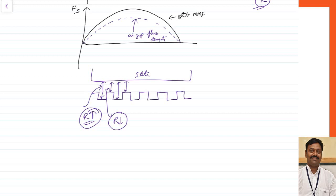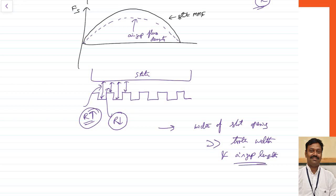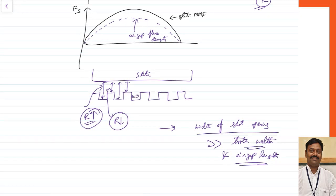This is the main reason for the production of slot harmonics. Slot harmonics are produced mainly because of slotting for keeping the winding either in the stator or in the rotor. It is observed that slot harmonics will be more dominating when the width of the slot opening is far greater compared to the tooth width and air gap length. This is the practical case for any type of machine, which is why slot harmonics will always be present.